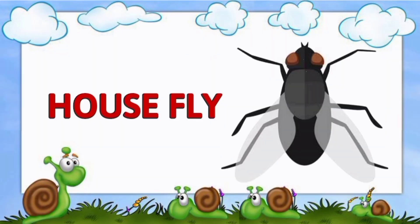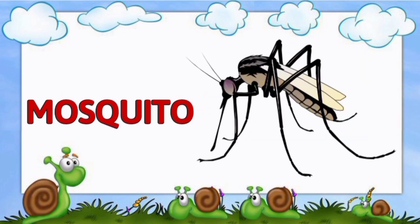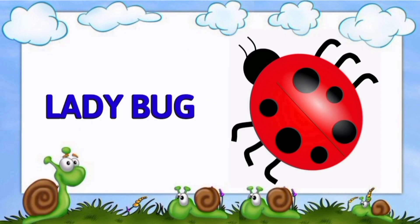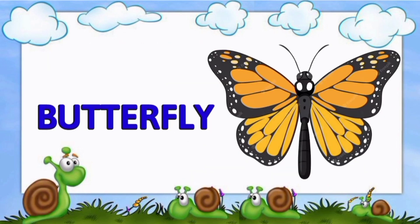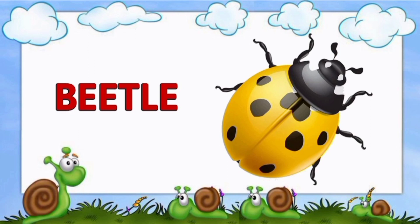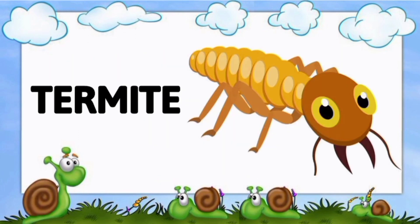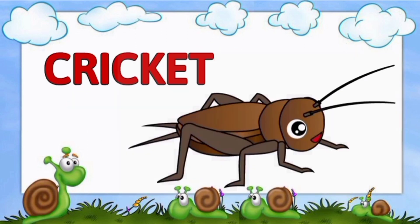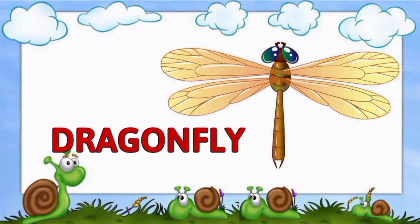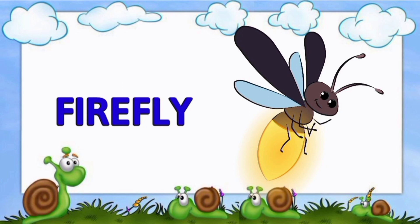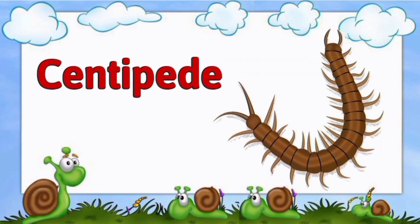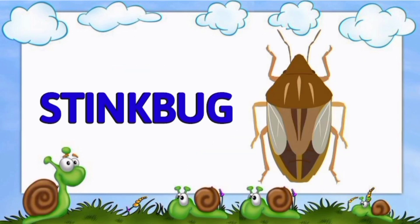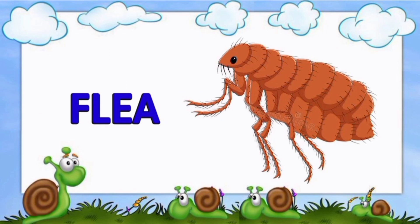Ant. Housefly. Mosquito. Cockroach. Honeybee. Ladybug. Grasshopper. Butterfly. Beetle. Locust. Termite. Fruitfly. Wasp. Cricket. Dragonfly. Moth. Firefly. Bumblebee. Centipede. Tick. Caterpillar. Stingbug. Flea. Louse.